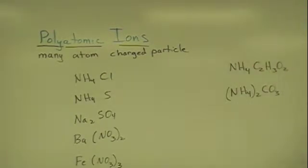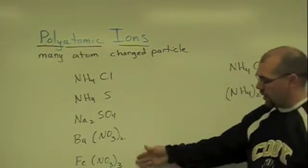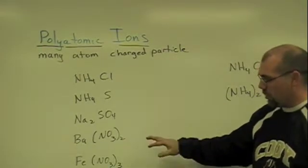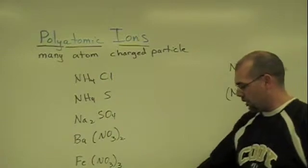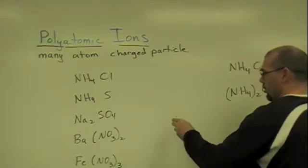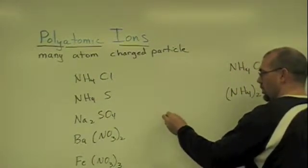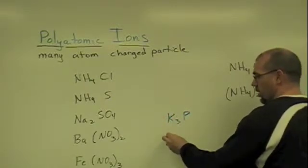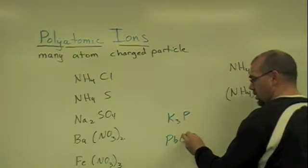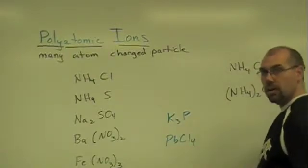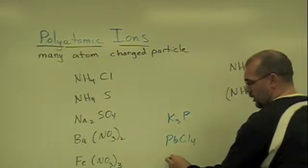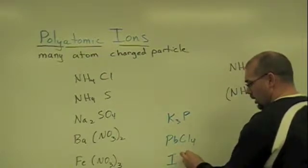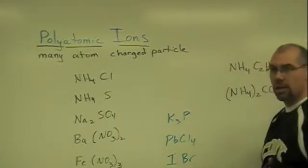We've got a few examples up here now to practice our naming with. When you see a compound in chemistry that's made up of more than two components, and what I mean by that is typically we've been seeing only two elements involved like K3P or PbCl4. We've only seen two elements, even with our non-metal compounds.